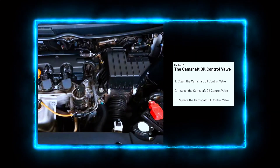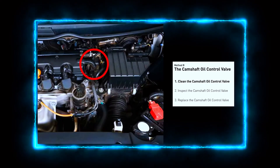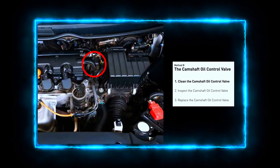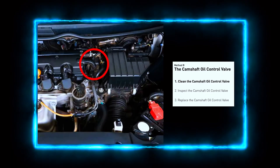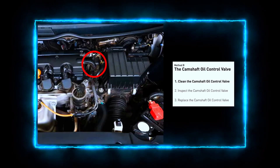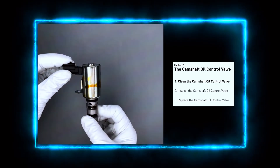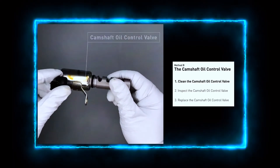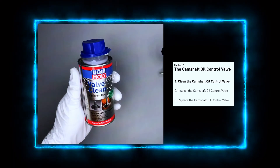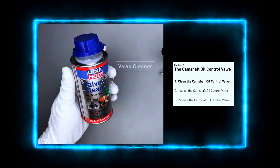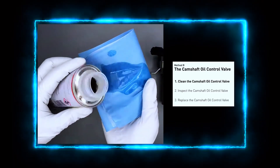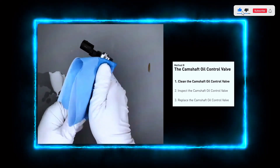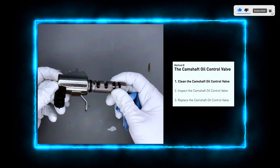Locate the camshaft oil control valve. Depending on your vehicle, it's usually mounted on the cylinder head near the camshaft — you'll typically find it bolted to the engine block with an electrical connector attached. Clean the oil control valve using a brake cleaner or electrical contact cleaner spray. Spray the valve thoroughly to remove any dirt or sludge buildup. Be sure to clean the valve's filter and any passages, then wipe it down with a clean cloth and let it air dry for a few minutes.